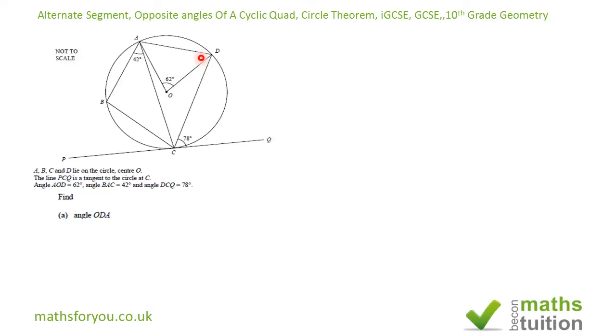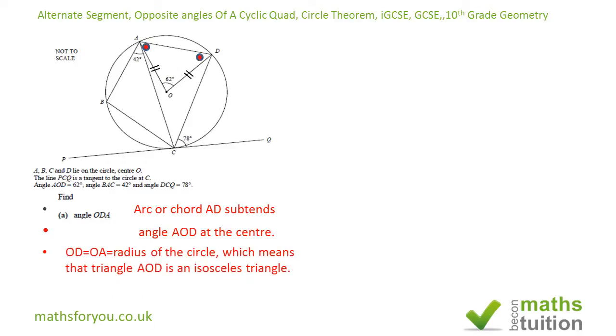We know that the angle is 62 degrees and this is the radius and this is the radius, so they must be equal. Those two lines are equal, which means that this is an isosceles triangle. That being the case, these two angles add up to 180 minus 62, because angles in a triangle add to 180. And because the angles are equal, each of these angles would be a half of 180 minus 62 degrees, and the answer is 59 degrees.